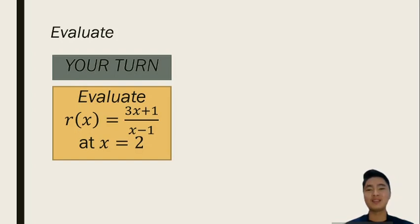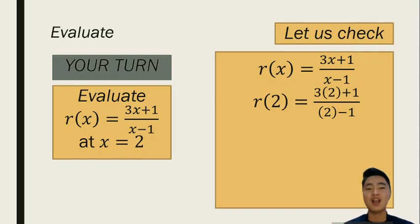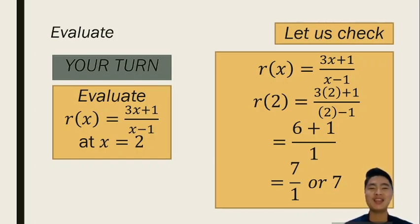Alright, time is off. Let's try to check your answer. Let's try to have r of x equals 3x plus 1 all over x minus 1. For this case, we replace the value of x as 2. Thus, you will have r of 2 is equal to 3 times 2 plus 1 all over 2 minus 1. You know the rule. Make sure to follow the order of operations. We will have 3 times 2 first before adding 1 which will give us 6 plus 1 over 1. Simplified further, we will have 7 over 1 or 7. And that is your final answer.